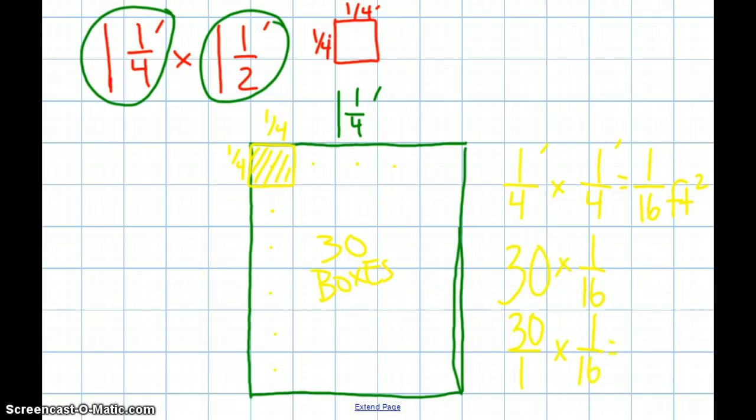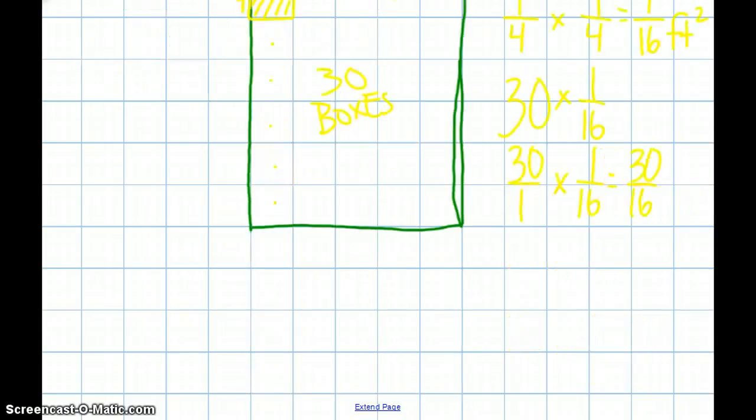If I turn that into a mixed number, 16 goes into 30 one time, with 14 left over, so I get 1 and 14 sixteenths, and when I reduce that fraction, I get 1 and 7 eighths square feet. That's one way to do it.